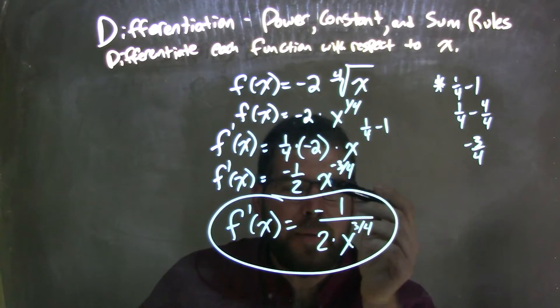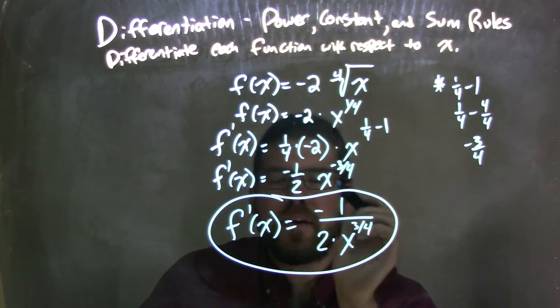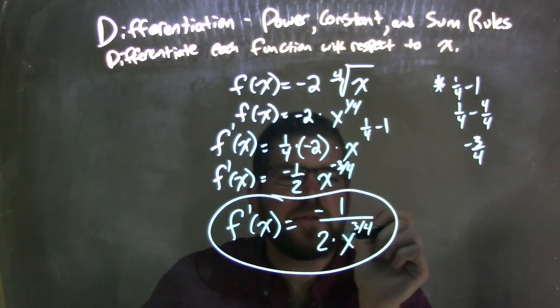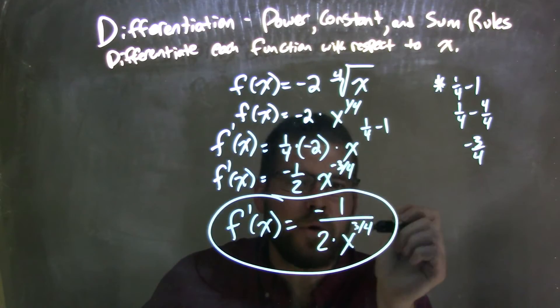So now we've simplified that. I brought my exponent down, or my power with the exponent that's negative, down to the denominator, making it positive, giving me my final answer, which is f prime of x is equal to a negative one all over 2 times x to the positive three-fourths power.